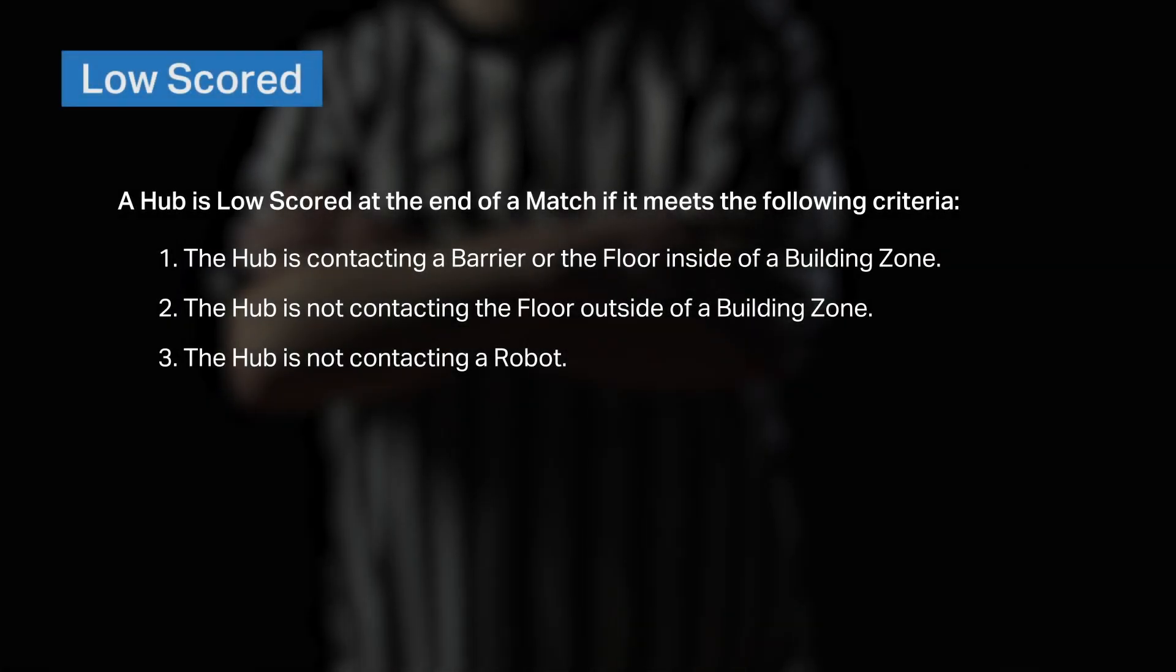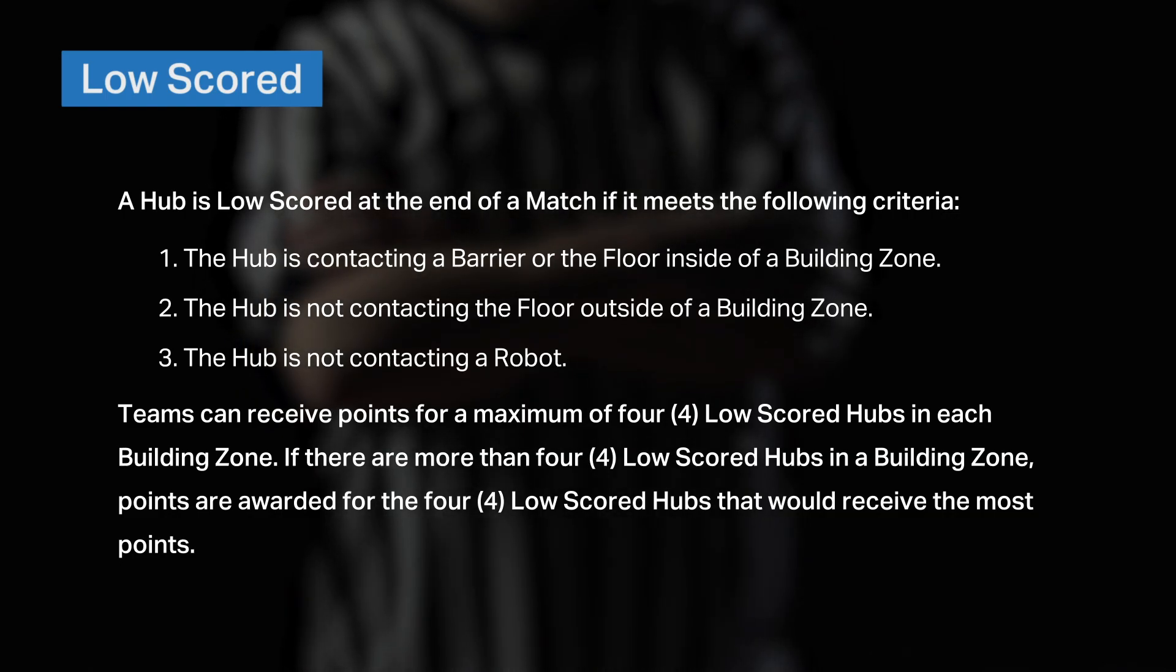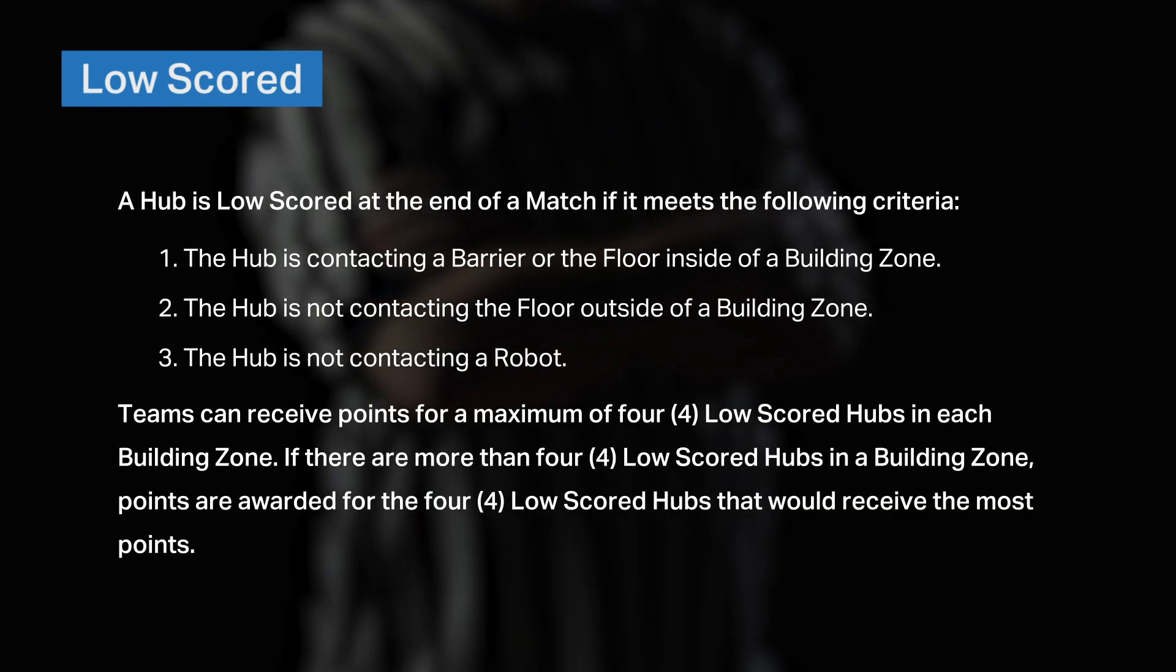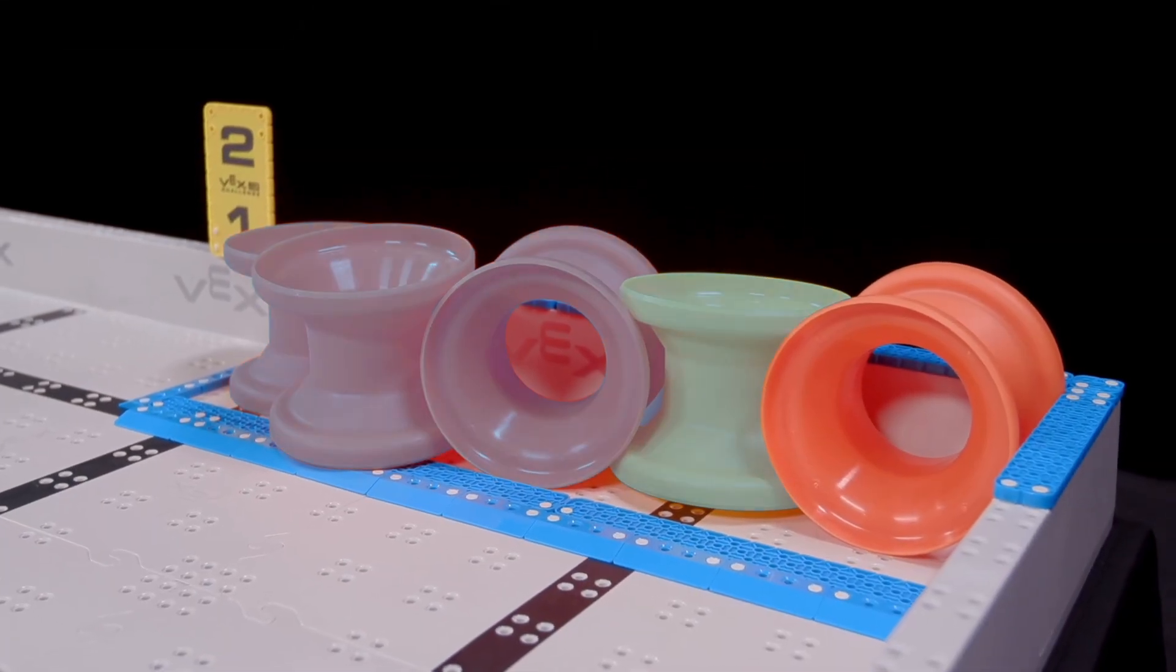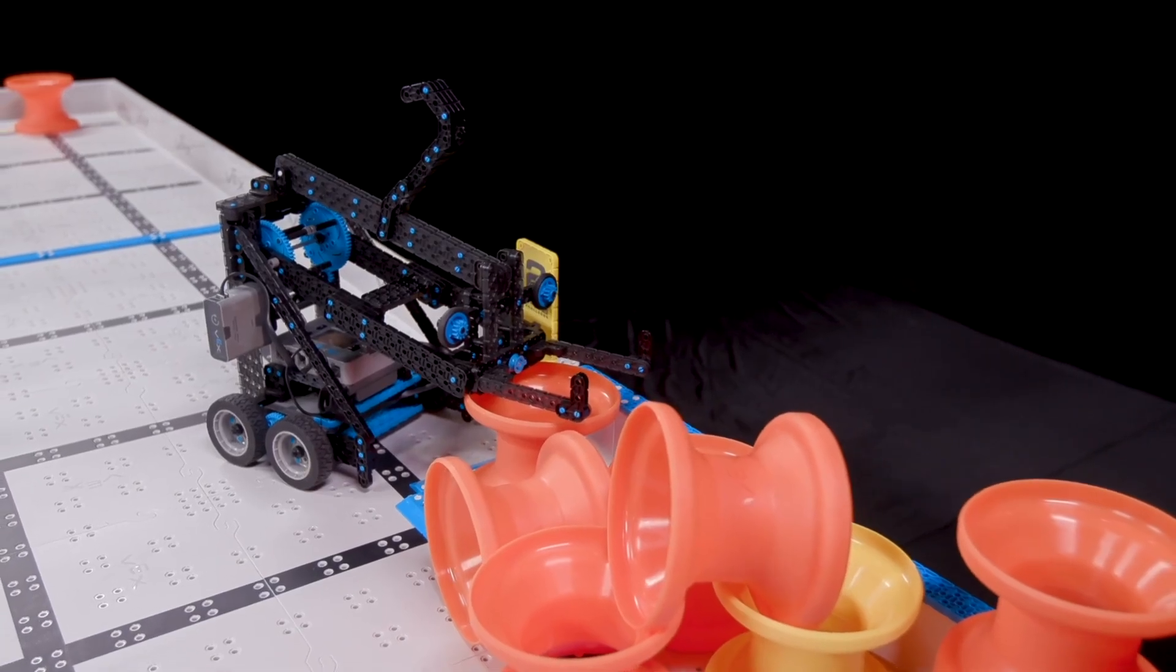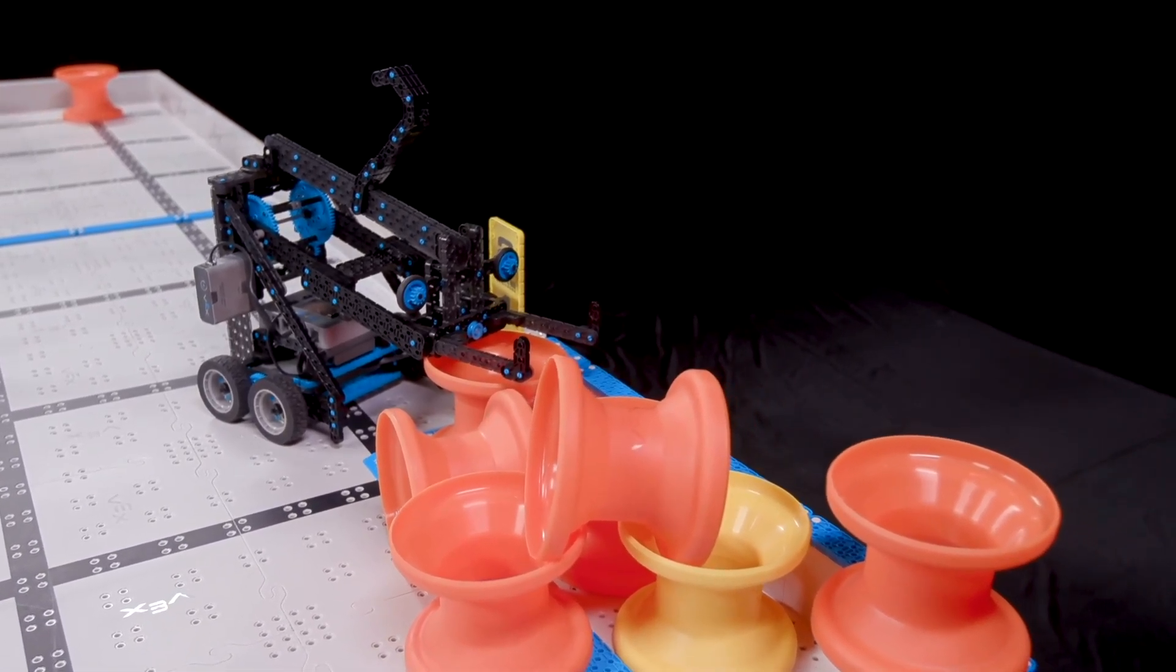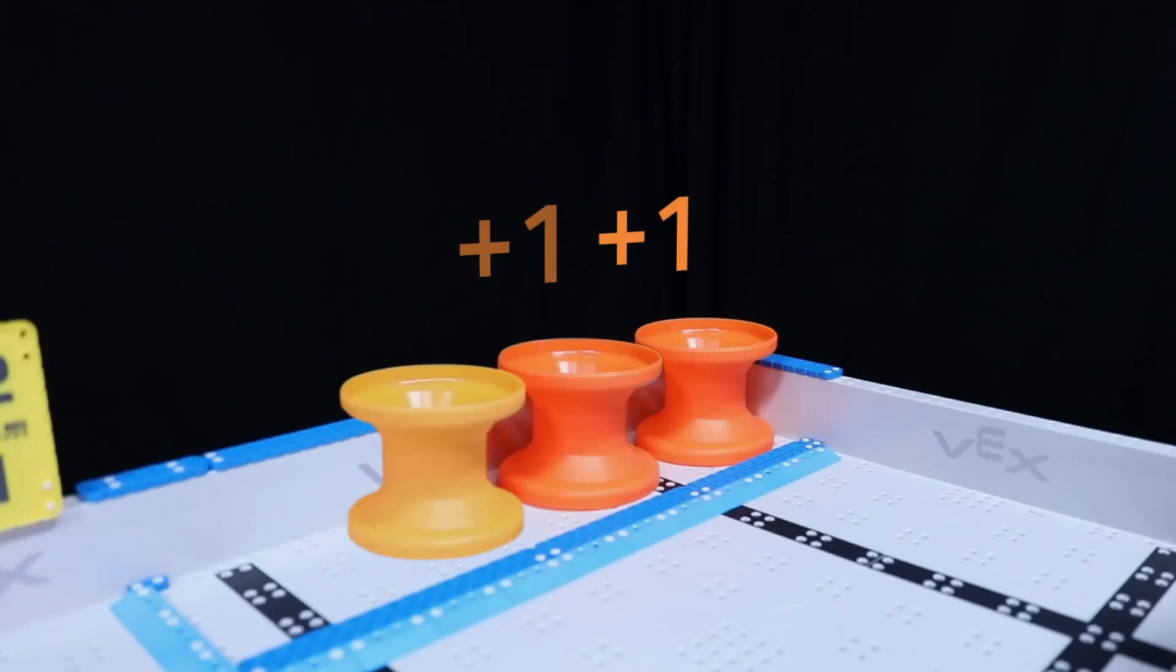The definition of low-scored also includes the following note: Teams can receive points for a maximum of four low-scored hubs in each building zone. If there are more than four low-scored hubs in a building zone, points are awarded for the four low-scored hubs that would receive the most points. So, in this scenario, these four hubs would be the ones that count for points. Most of the time, you won't really have to worry about which hubs count for points. If there are more than four regular hubs, just put a four on the score sheet. If there are any bonus hubs, just make sure you count those and don't count any more than four total low-scored hubs. Low-scored hubs are worth one point each, and low-scored bonus hubs are worth two points each.